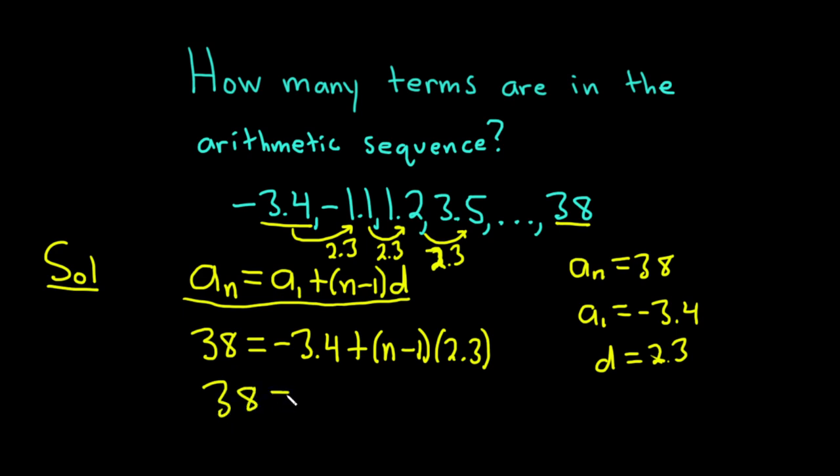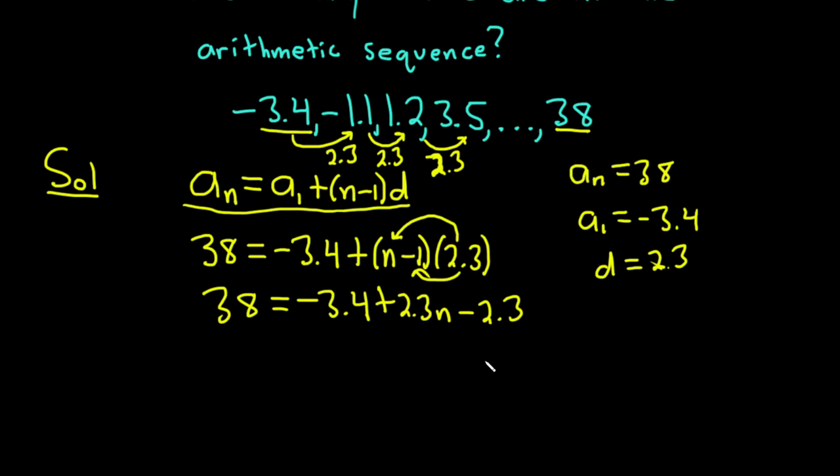We have 38 equals negative 3.4. Let's go ahead and distribute this 2.3. 2.3 times n is just going to be plus 2.3 n. And 2.3 times negative 1 is minus 2.3. We've got 38 equals negative 3.4 and a negative 2.3. We're combining those and that gives us negative 5.7 plus 2.3 n.